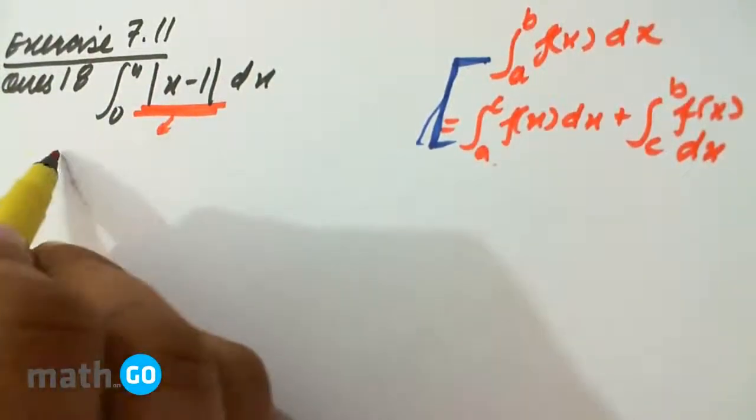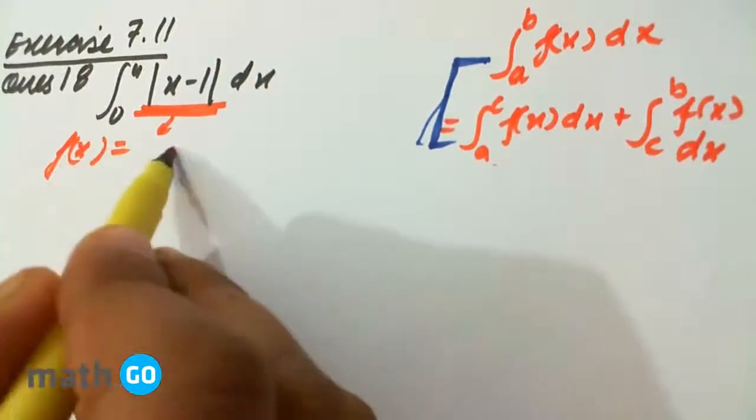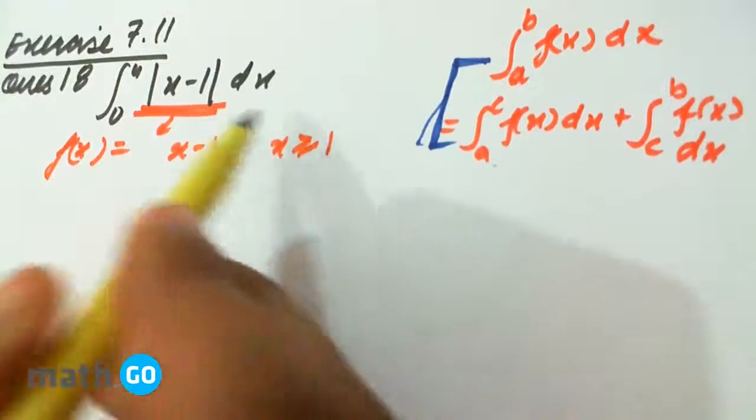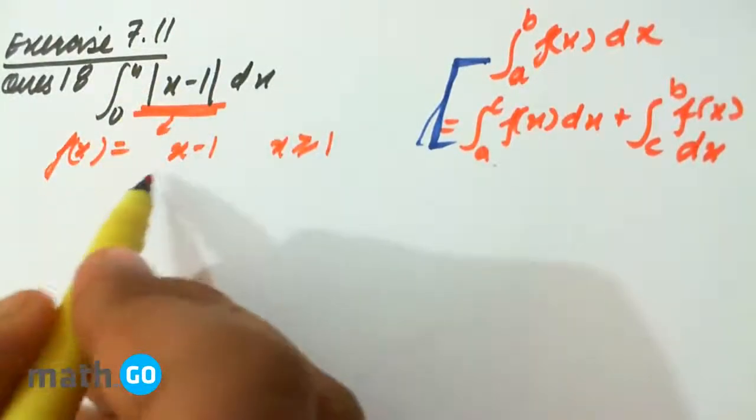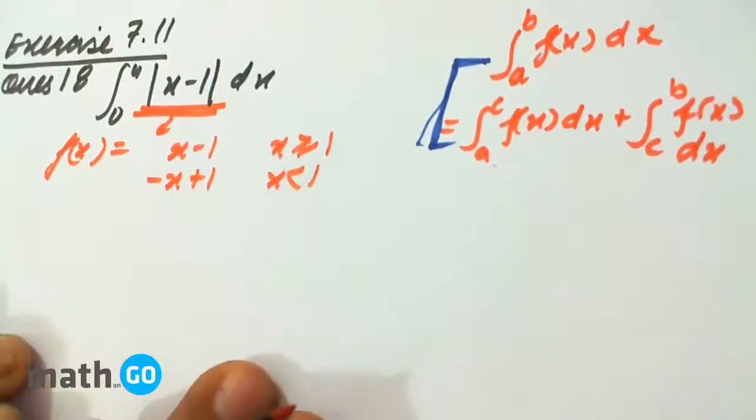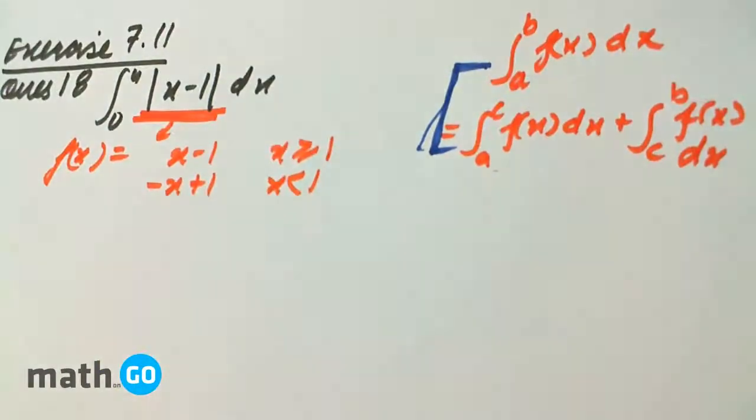we can define it as f(x) equals x minus 1 if x is greater than or equal to 1, because it is a mod function, and minus x plus 1 if x is less than 1. So how do we break it?